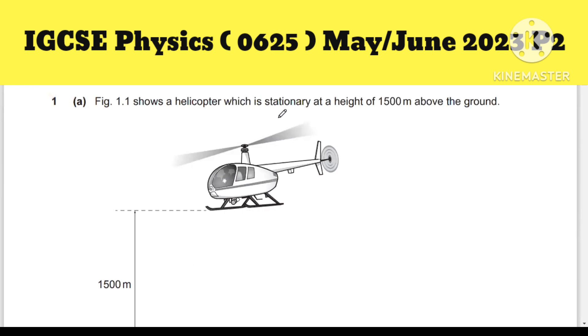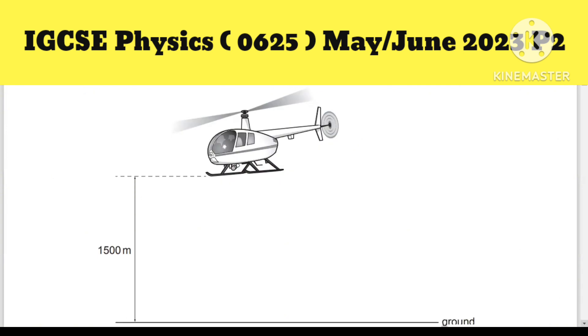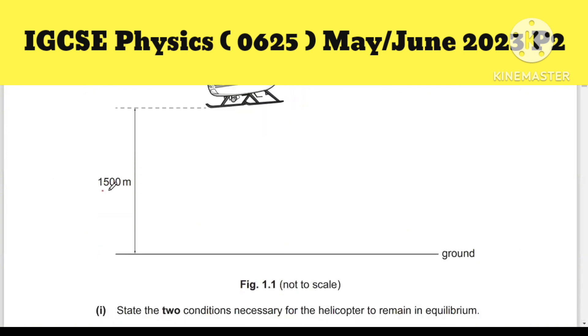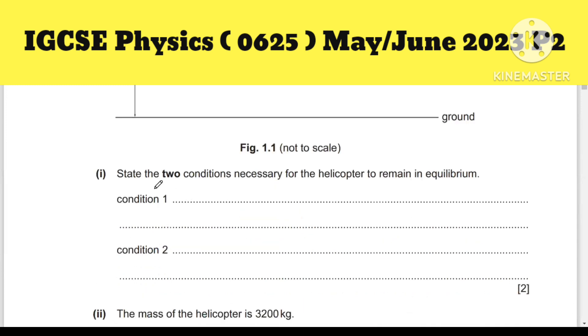The diagram shows a helicopter which is stationary, meaning at rest, at a height of 1500 meters above the ground. The question asks to state two conditions necessary for the helicopter to remain in equilibrium. One is about force and the other is about moment. You will get two marks.